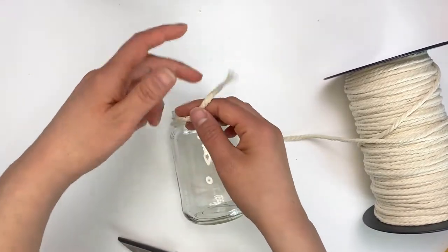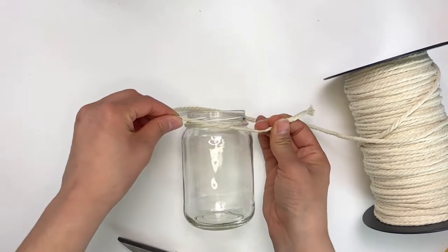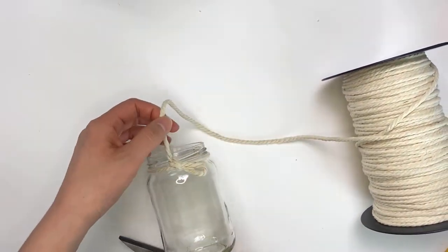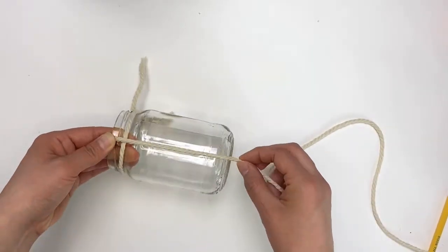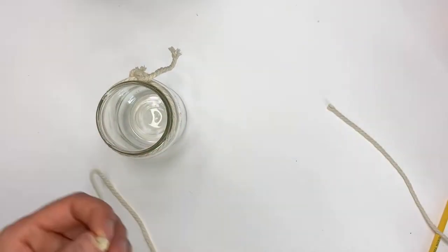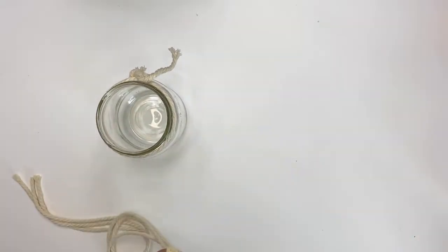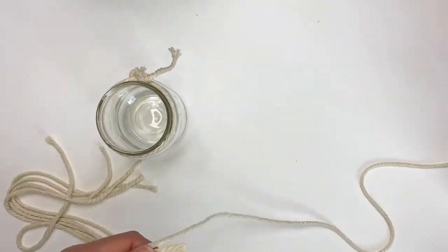Then you're going to cut pieces of macrame cord that are four times the length of your jar, and for my size jar I ended up cutting eight of these pieces.